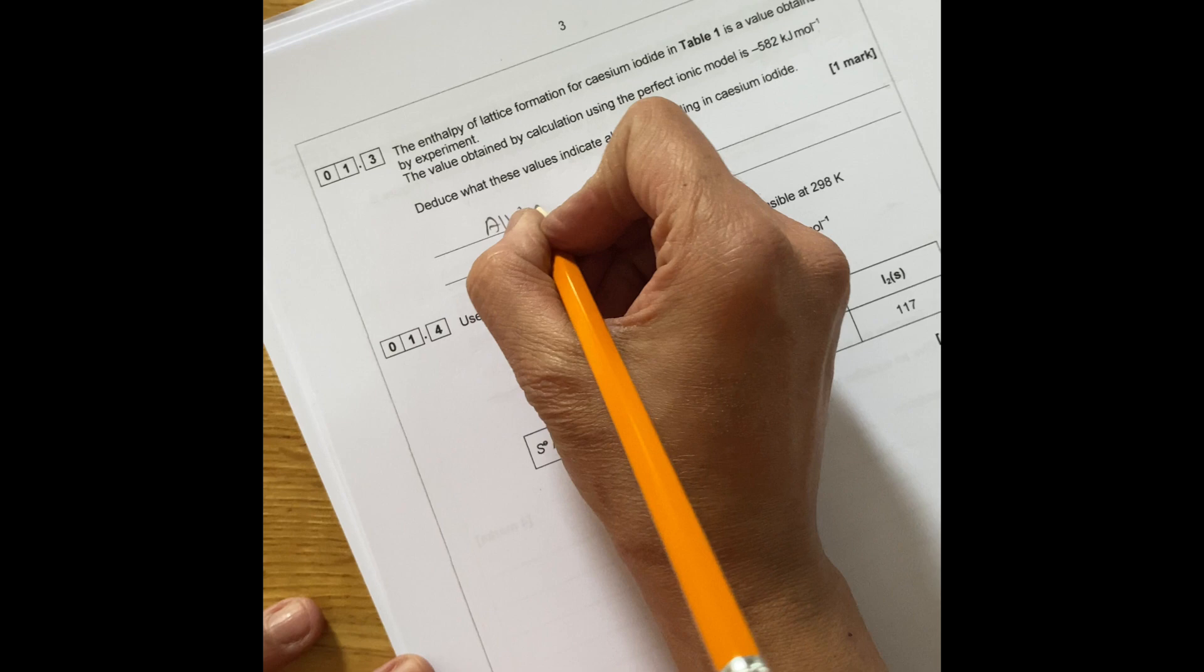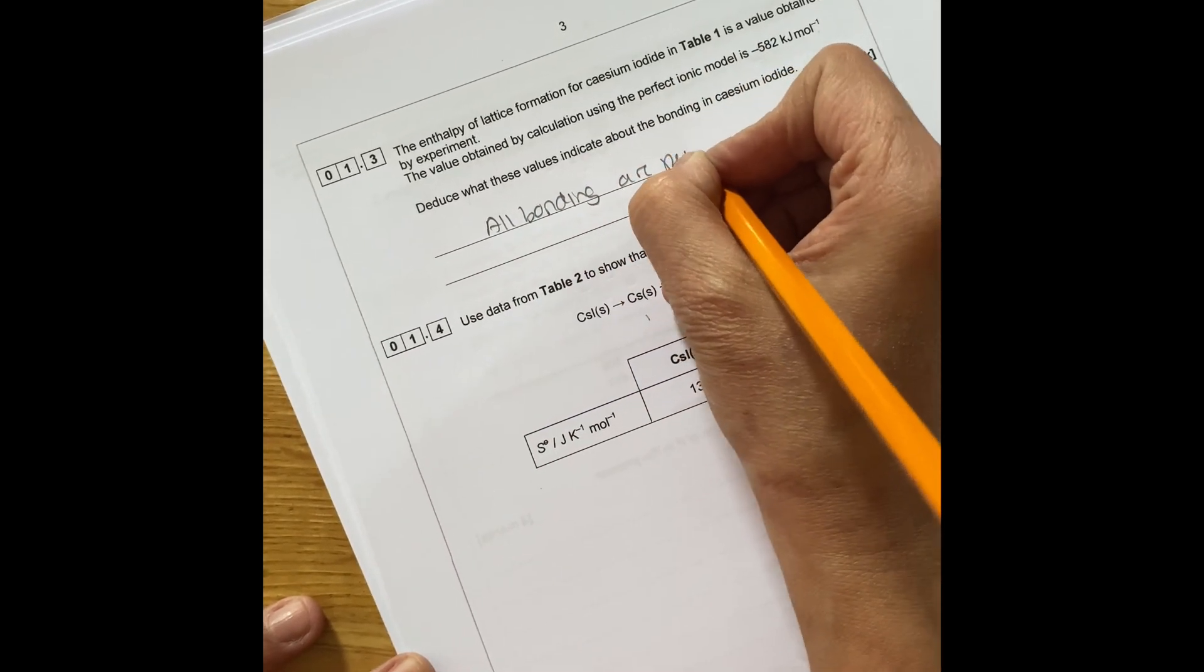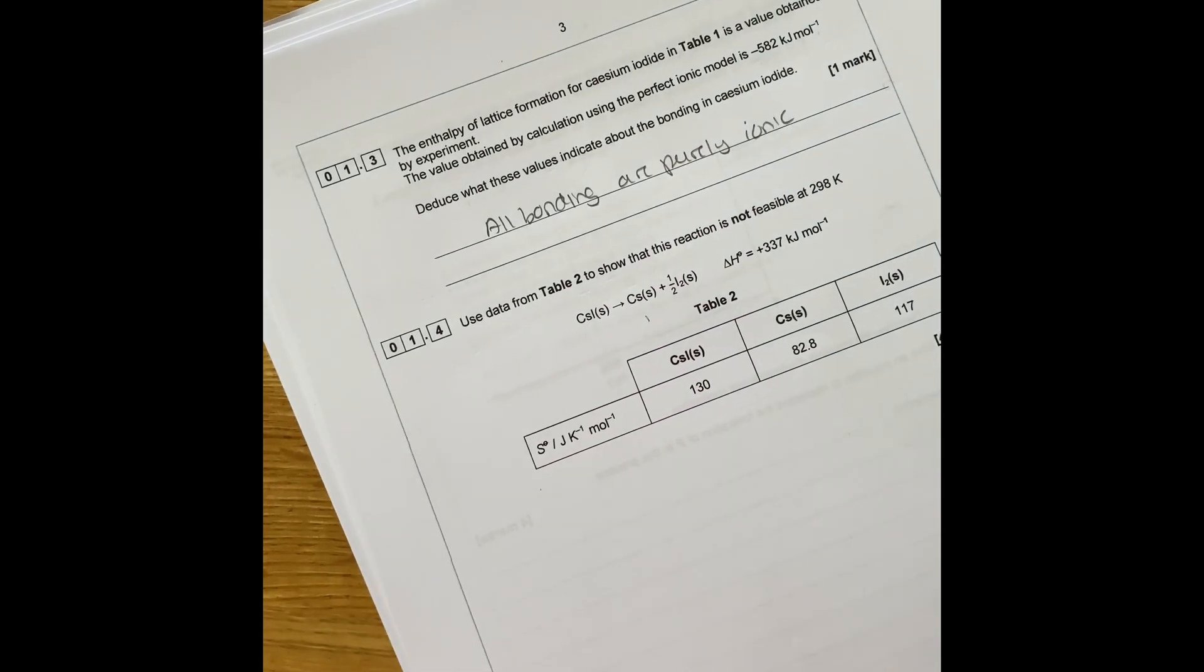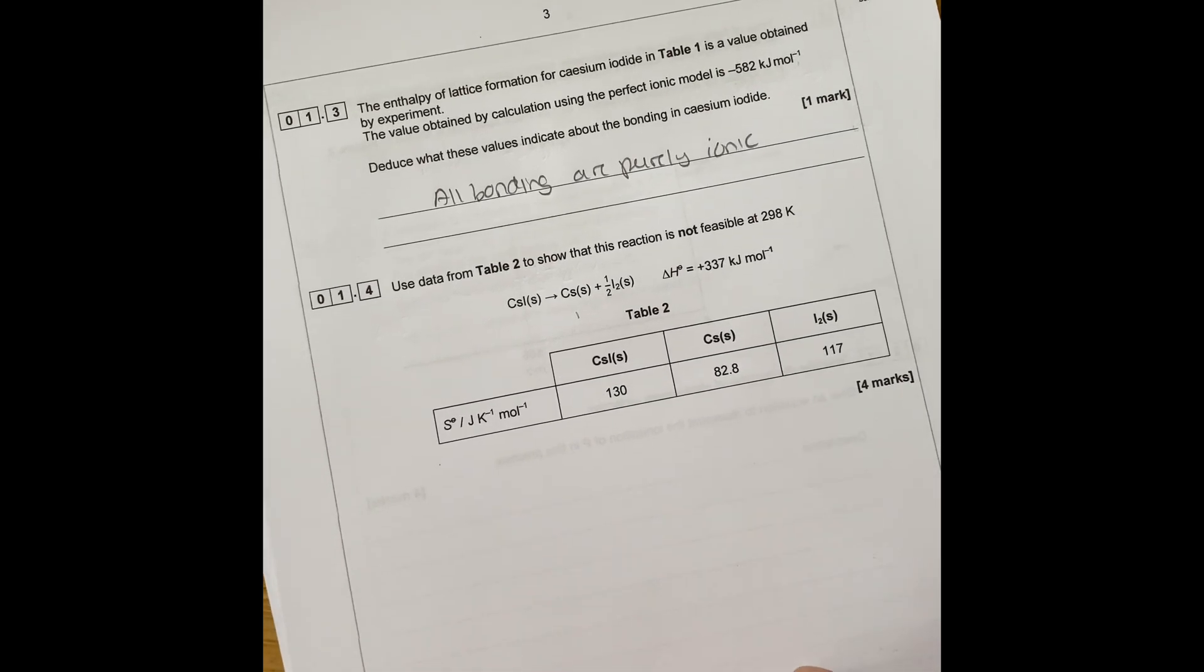That means that all bondings, all the bonds in cesium iodide are purely ionic. All bonding are purely ionic. That means there's no movement and there's no covalent character at all in there.